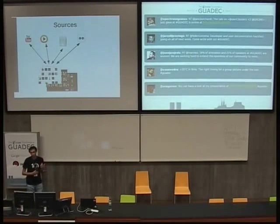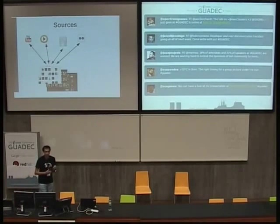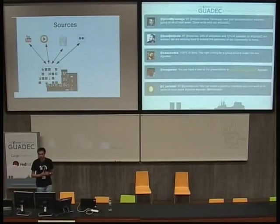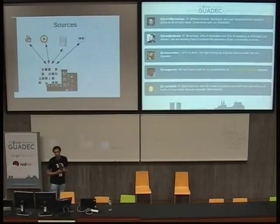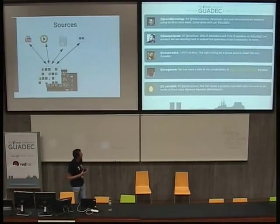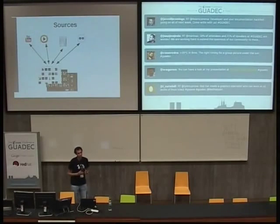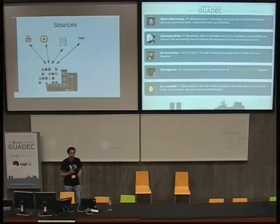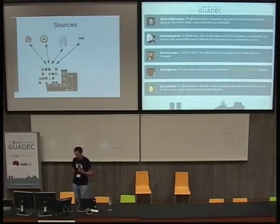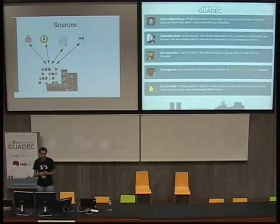The problem is when you want your application to get access to several sources at the same time. For instance, you want to play content from YouTube and also from Vimeo. Each source or web service has a different API. Even when you want to do something quite simple like search for videos or list all the videos available, you still need to write different API integrations.